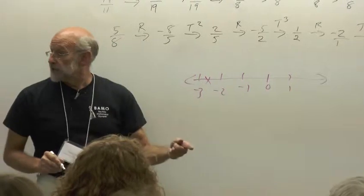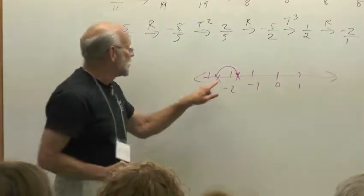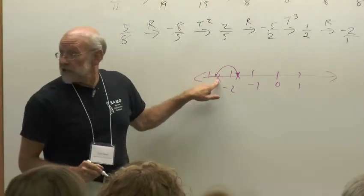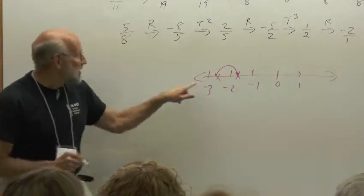What does the twist operation do? It advances us exactly one unit. So, I'll be in exactly the same position between these two numbers as I was.